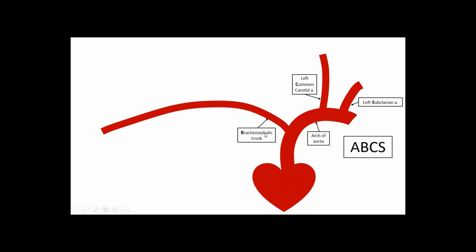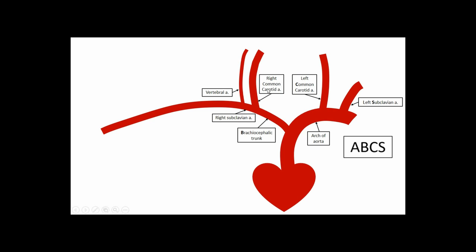Continuing along the right arm of the patient: the brachiocephalic trunk gives off a branch superiorly, which is the right common carotid artery. After giving off the right common carotid artery, it becomes the right subclavian artery. Notice the branching pattern differs between right and left — the left comes directly off the aorta, while the right is a continuation of the brachiocephalic trunk. The next branch off the right subclavian artery, moving proximally to distally, is the vertebral artery. The common carotid will split into external and internal carotid arteries.